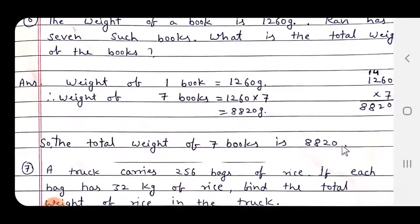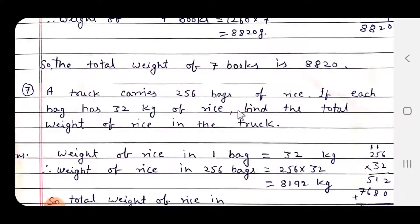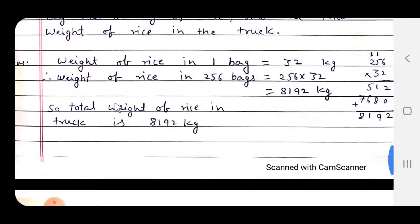The total weight of seven books is 8820 grams. A truck carries 256 bags of rice. If each bag has 32 kg of rice, find the total weight of rice in the truck. Weight: 256 multiplied by 32 = 8192 kg. So total weight of rice in truck is 8192 kg.